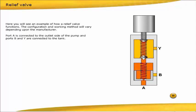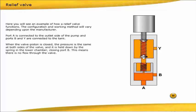When the valve piston is closed, the pressure is the same at both sides of the valve and it is held down by the spring in the lower chamber, closing port B. This means there is no flow through the valve.